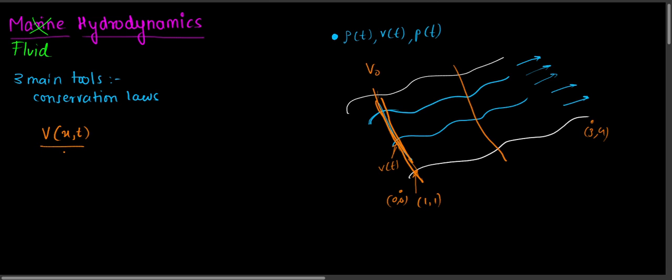Previously, when we considered each and every single particle, we got a function of time only because we were following that particle through time — we don't care about where the particle is spatially. But here, we are not considering each particle as a single entity; we are considering them as a whole. Therefore we get velocity as a function of both space and time.